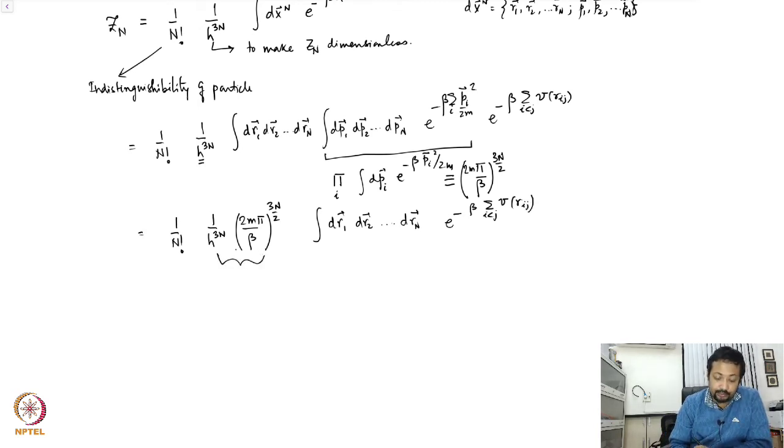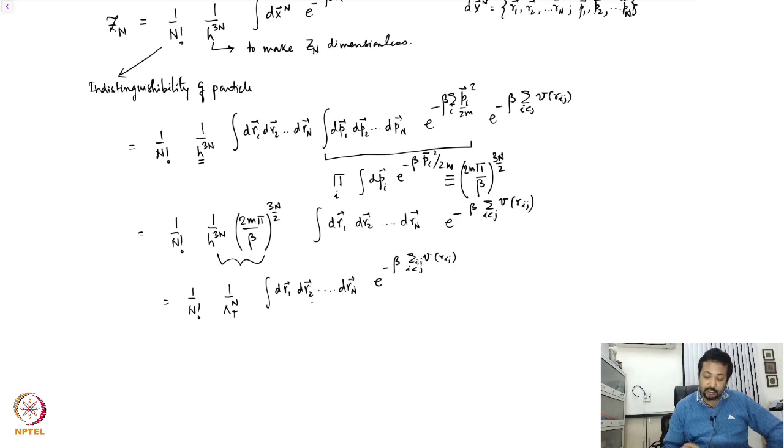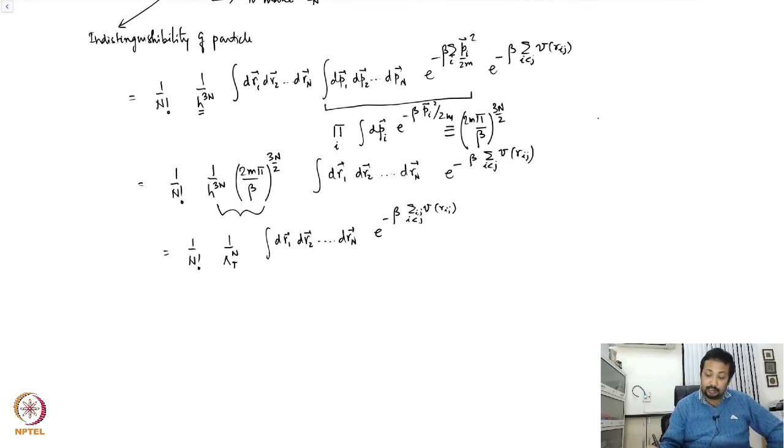This part we are already very familiar with and this takes the form 1 over n factorial, 1 over lambda_t raised to the power n, where lambda_t is the thermal de Broglie wavelength, uh thermal de Broglie volume, and I have dr_1 dr_2 dr_n e to the power minus beta sum of i less than j V of r_ij. So there is a double summation i comma j as well as i less than j. Now lambda_t is lambda_t whole cube where lambda_t is beta, it's going to be beta h square over 2m raised to the power 1/2.